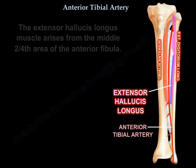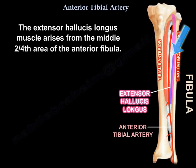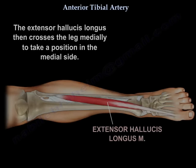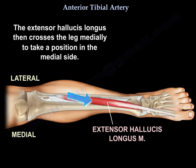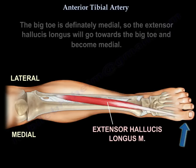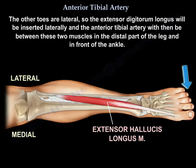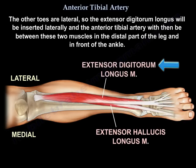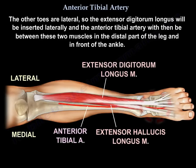The extensor hallucis longus muscle arises from the middle two-fourths of the anterior fibula. It then crosses the leg medially. The big toe is medial, so the hallucis will be medial, while the other toes are lateral, so the digitorum will be lateral — and the artery will be in between them in the distal part of the leg and in front of the ankle.